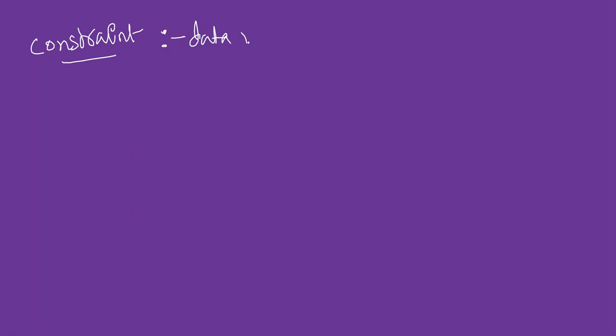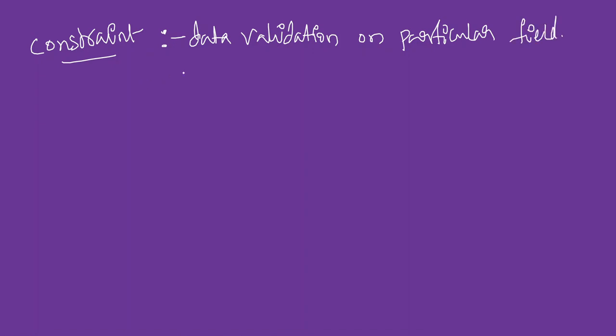Next, we will do a constraint. A constraint is a data validation on a particular field. When we create a particular table, we consider data validation on a particular field, or a validation on a table. So a constraint is called data validation.